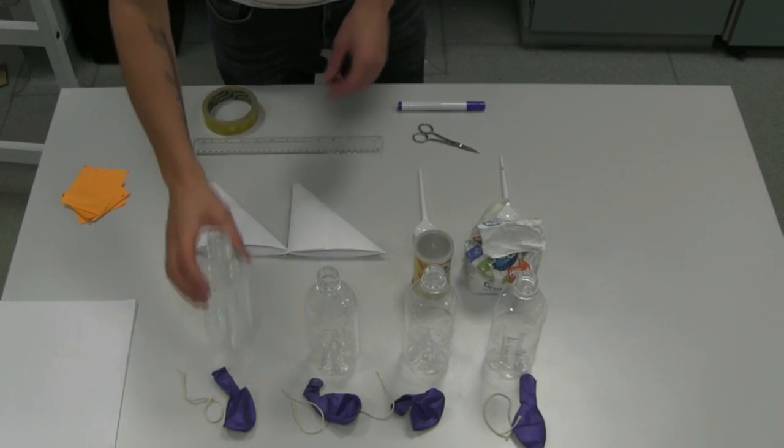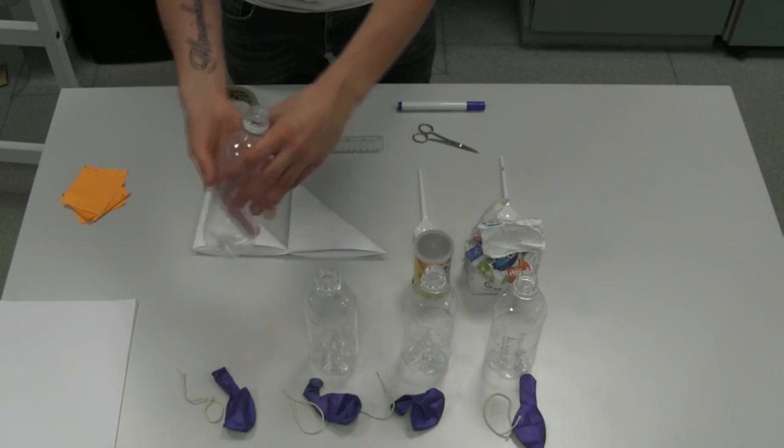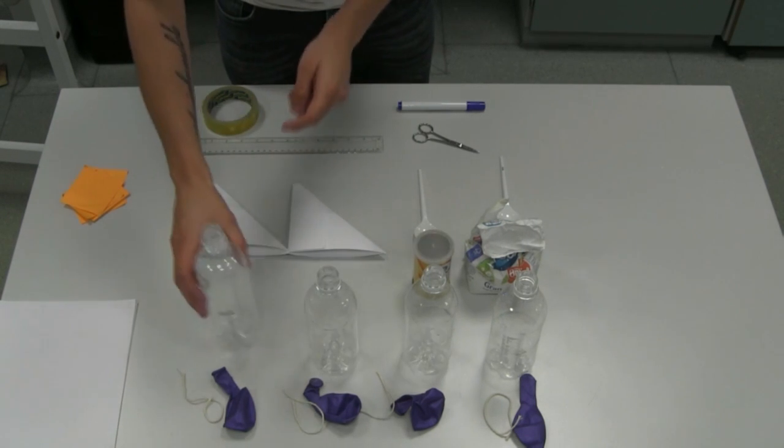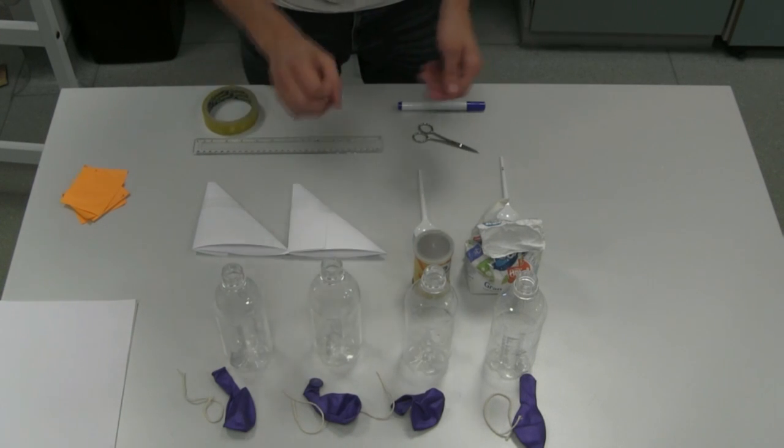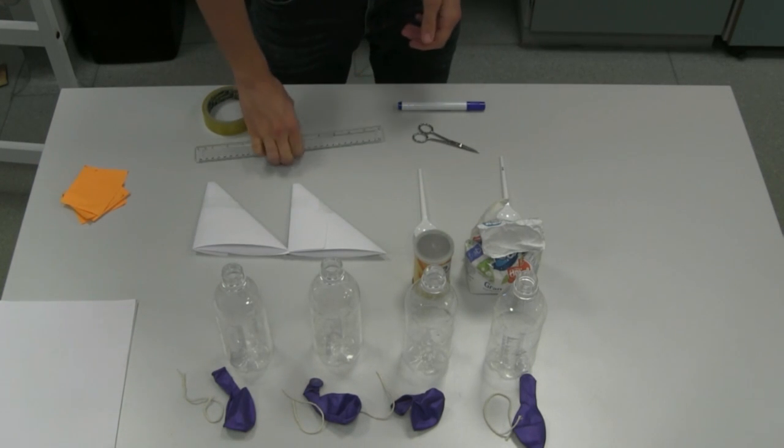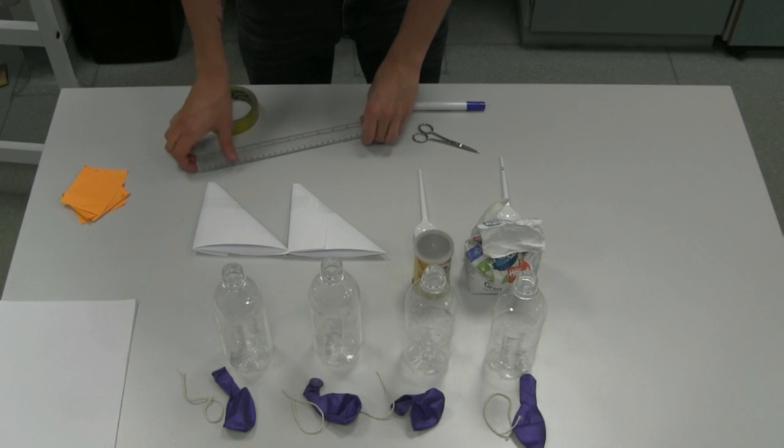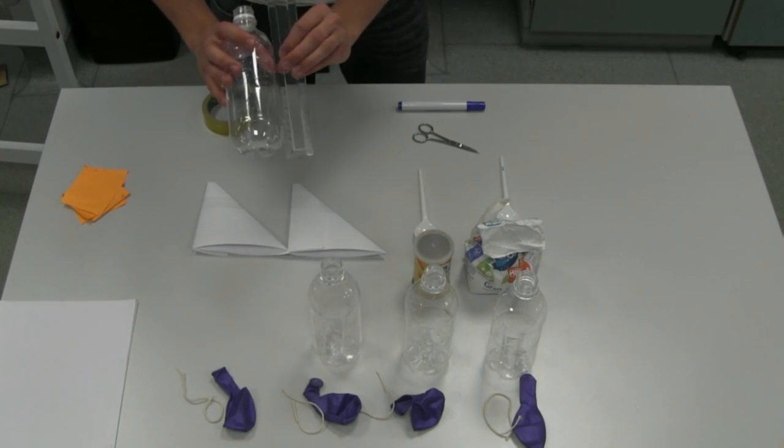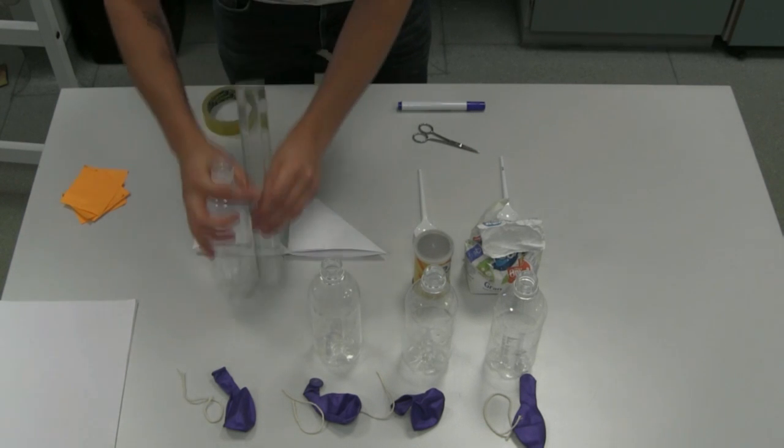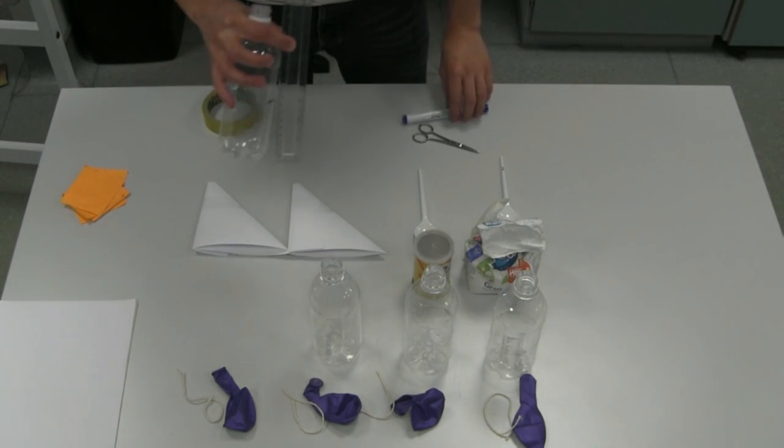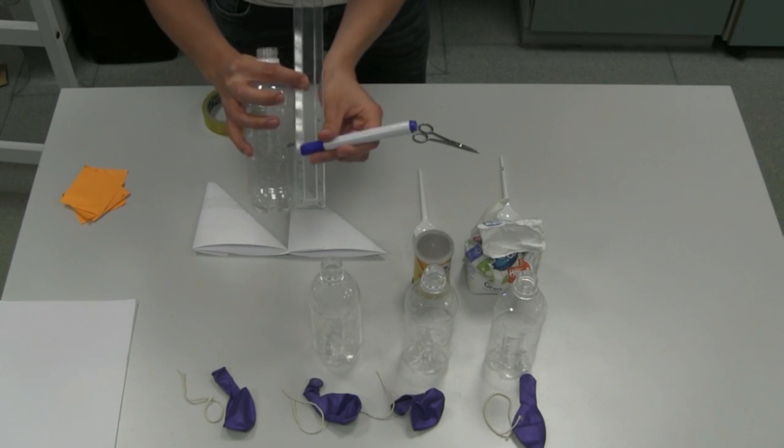First things first, you need to make sure any labels are taken off each bottle, and then you need to mark each bottle seven centimeters from the bottom using a ruler and a marker pen.